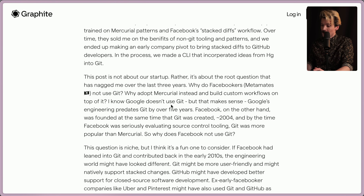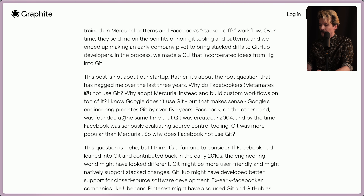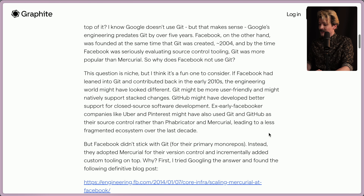Why adopt Mercurial instead and build custom workflows on top of it? Google doesn't use Git either, but that makes sense — Google's engineering predates Git by over five years. Facebook, on the other hand, was founded at the same time that Git was created, in 2004. By that time, Facebook was seriously evaluating source control tooling. Git was more popular than Mercurial, so why did Facebook not use Git?